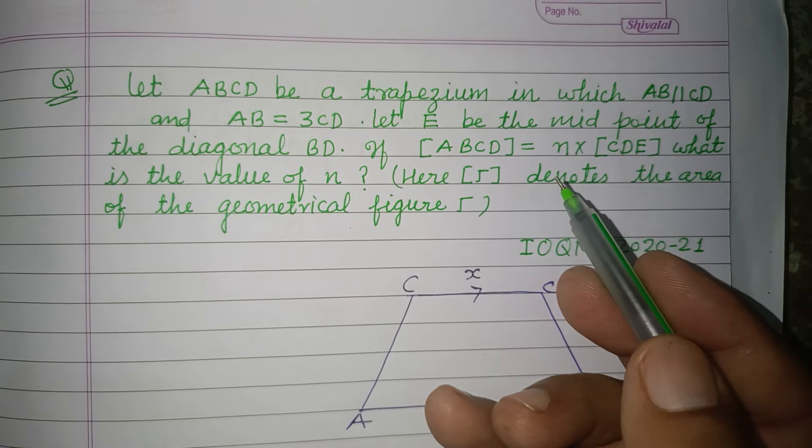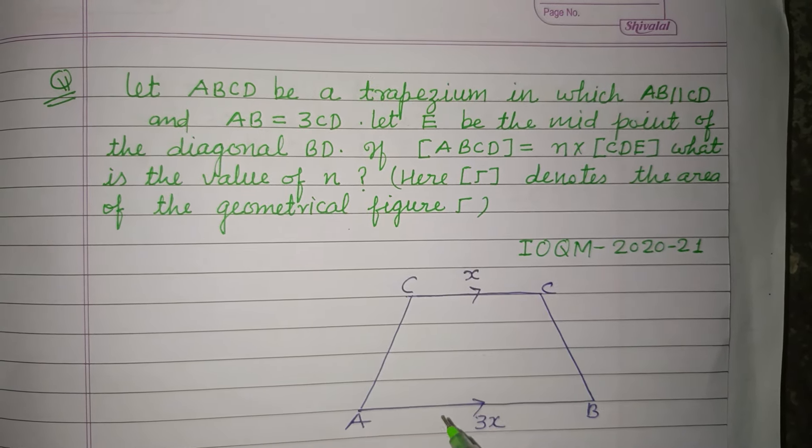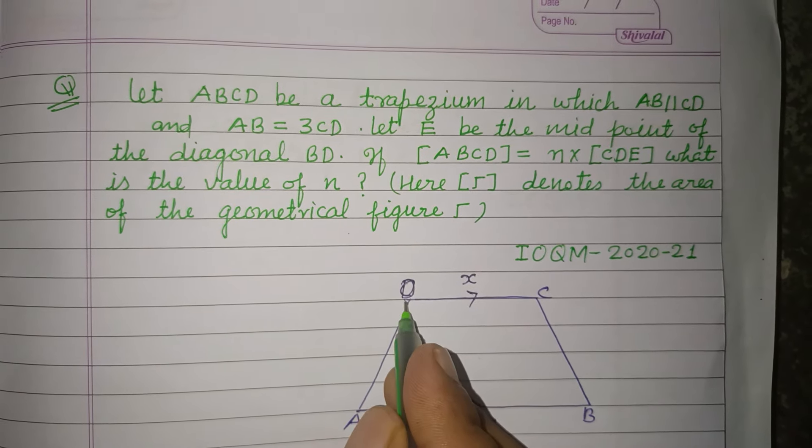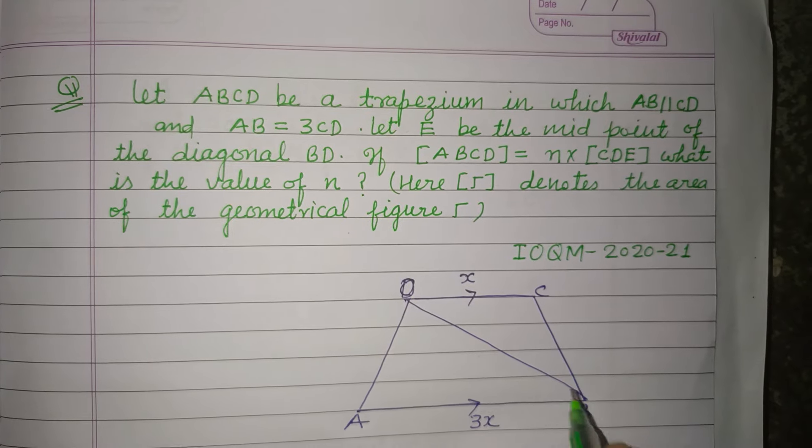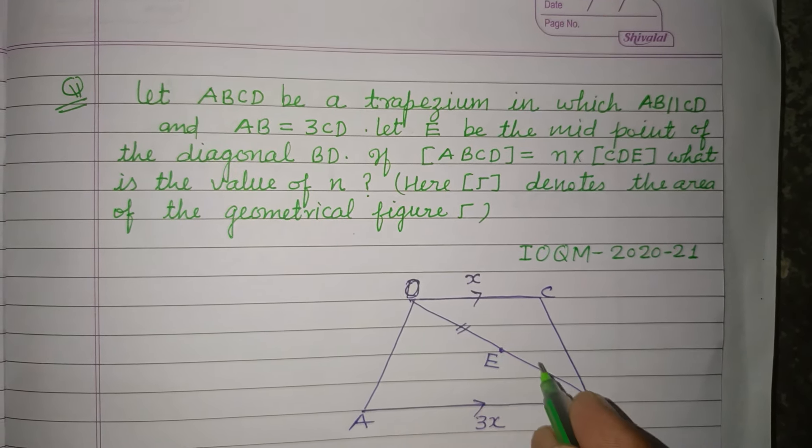Let E be the midpoint of the diagonal BD. So here, this is diagonal BD. Midpoint of diagonal BD is E, so this equals this part.